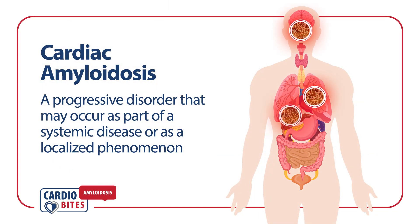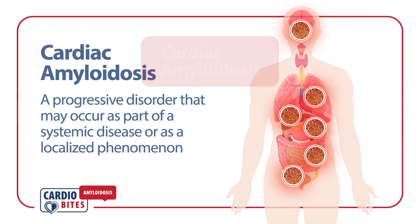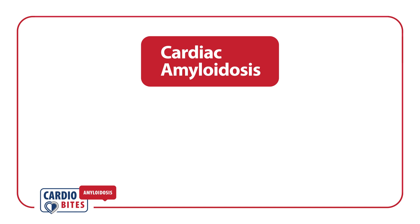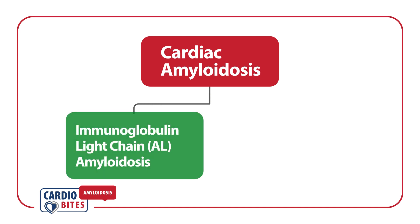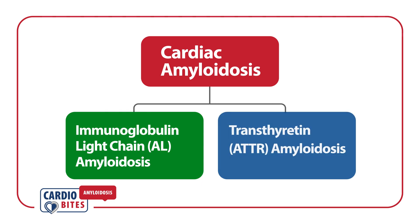Cardiac amyloidosis is a progressive disorder that may occur as part of a systemic disease or as a localized phenomenon. There are two types of amyloidosis that commonly present with cardiac complications: immunoglobulin light chain amyloidosis and trans-thyretin amyloidosis.